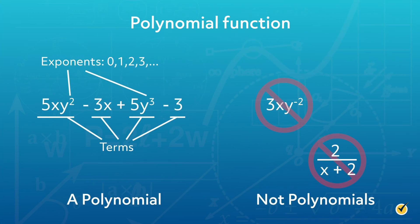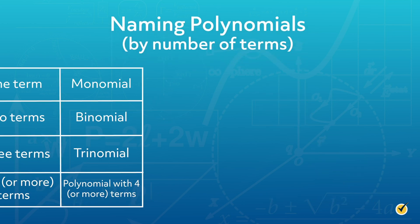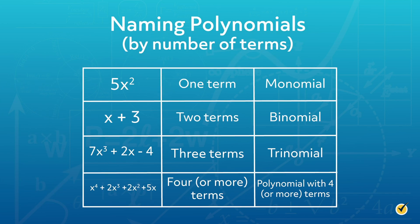Polynomial functions cover a broad category within the classification of algebraic functions. Polynomial functions are defined as having powers of one or more variables. This means that the variables can be raised to whole number exponents, but cannot be negative or decimals. Terms of a polynomial are joined by the operations of addition or subtraction. Polynomials can have one or more terms, and polynomials are often named according to the number of terms.